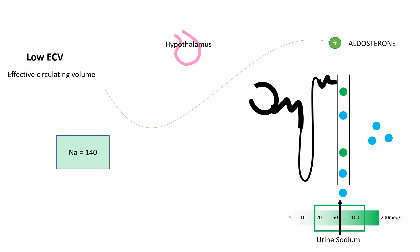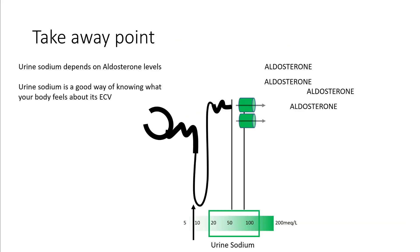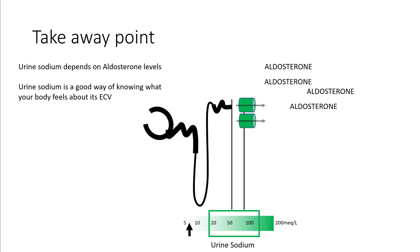A more robust response comes from aldosterone. Low ECV is a good stimulator of the renin-angiotensin system, resulting in secretion of aldosterone. Aldosterone causes sodium reabsorption in the distal convoluted tubules — as aldosterone increases, you absorb more sodium and your urine sodium levels drop. You do not become hypernatremic because water follows salt in an iso- or smaller pattern.